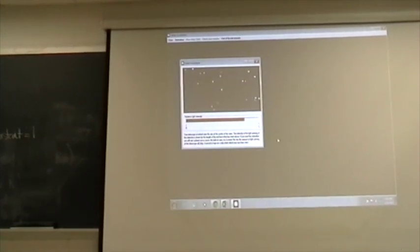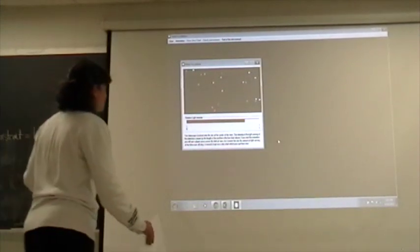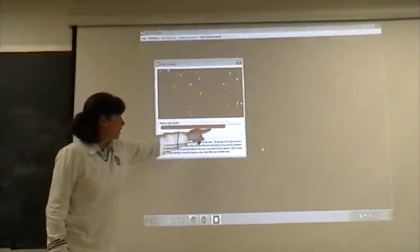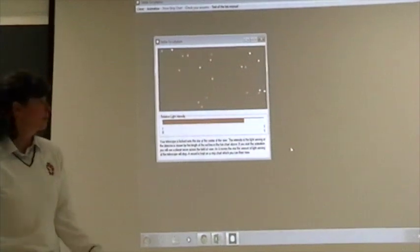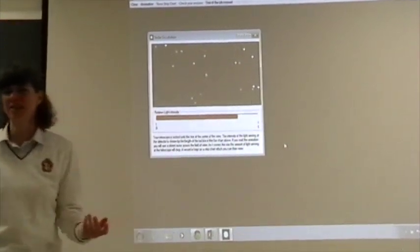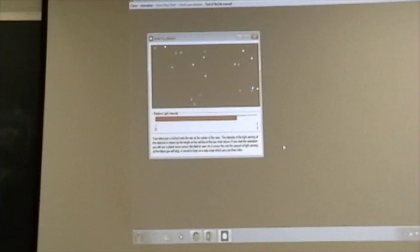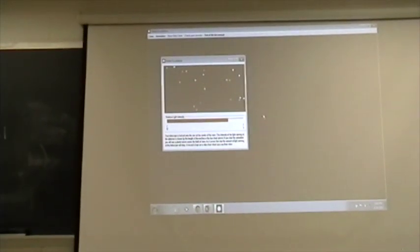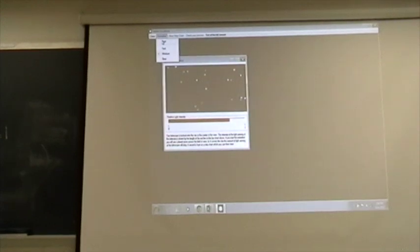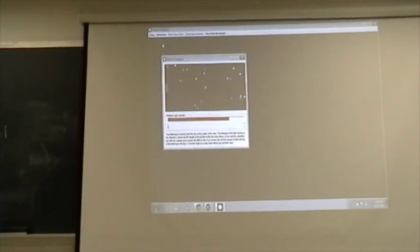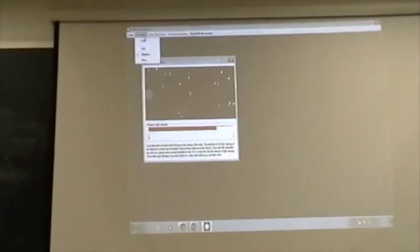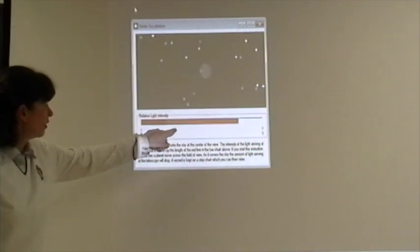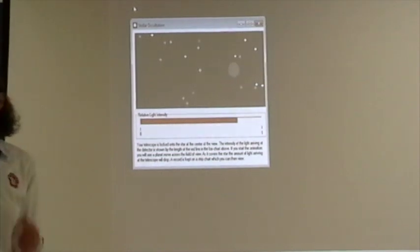When you open this up, you will get a view of the sky, and your telescope is centered on the star right here. The red bar down here just gives you a measurement of the relative light intensity coming from that star. Normally this intensity would be constant. If we go ahead and start the animation, you'll see that a planet begins to move into this field of view, and notice the light from that star dims.